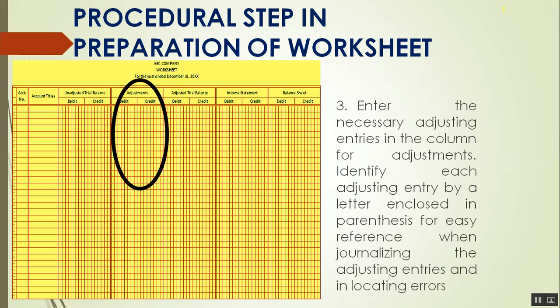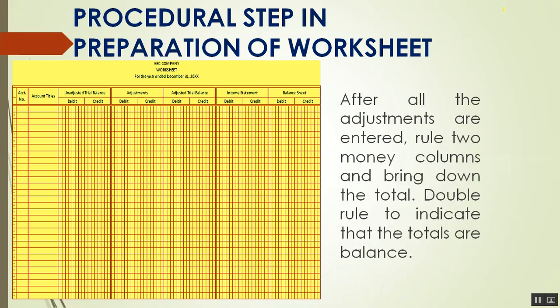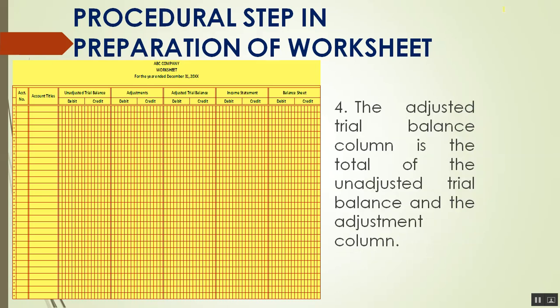Next, enter the necessary adjusting entries in the column for adjustments. Identify each adjusting entry by a letter in parentheses for easy reference when journalizing the adjusting entries and locating errors. After all adjustments are entered, rule the two money columns, bring down the total, and double-rule to indicate that the totals are balanced.